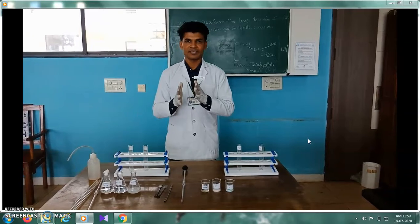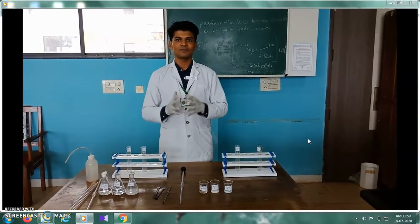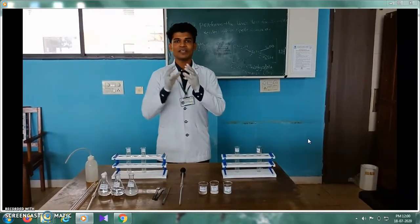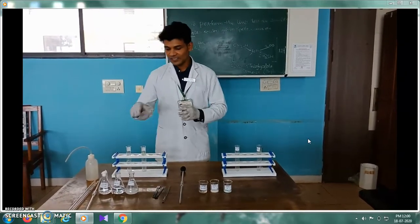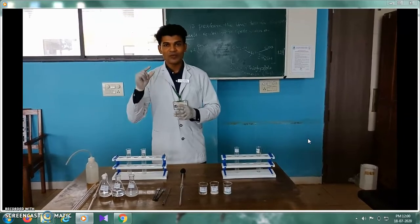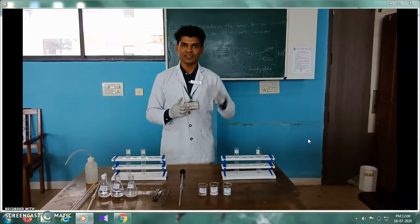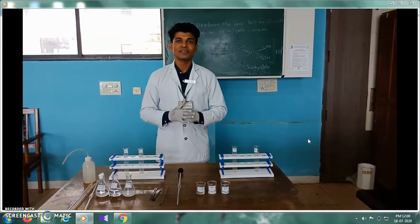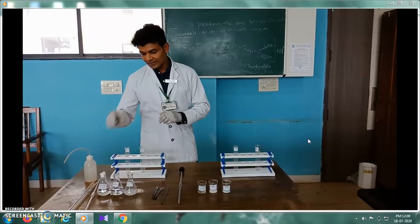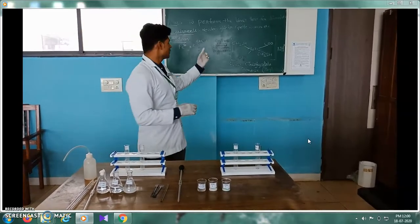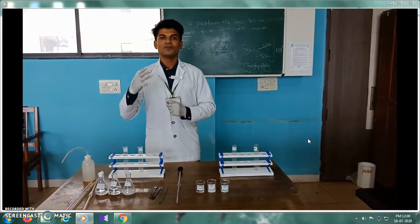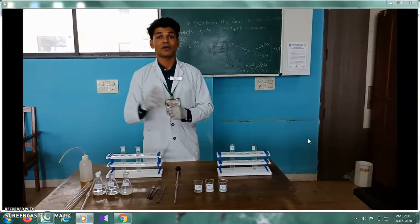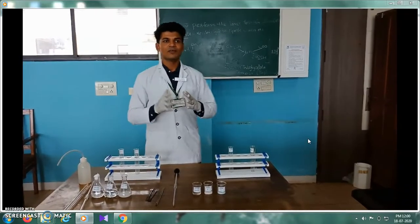Now let's understand the principle for the Limit Test of Iron. When iron impurity is present in the pharmaceutical substance, we use citric acid, thioglycollic acid, and ammonia. The iron impurity reacts with the thioglycollic acid to form a complex — ferrous thioglycollic acid — which shows color in alkaline conditions, which is why we use ammonia solution. Citric acid is used to prevent ferrous ions from reacting with the ammonia solution and forming ferrous hydroxide.